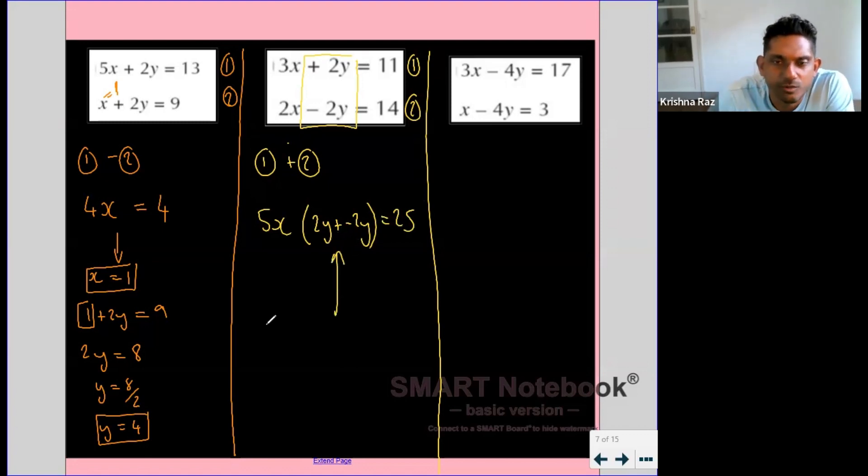And you can notice that 2y plus minus 2y is 0. So in this case, when the signs are opposite, we needed to add the equations, and that would have eliminated the y, leading us to have x equals 25 over 5, which is 5.